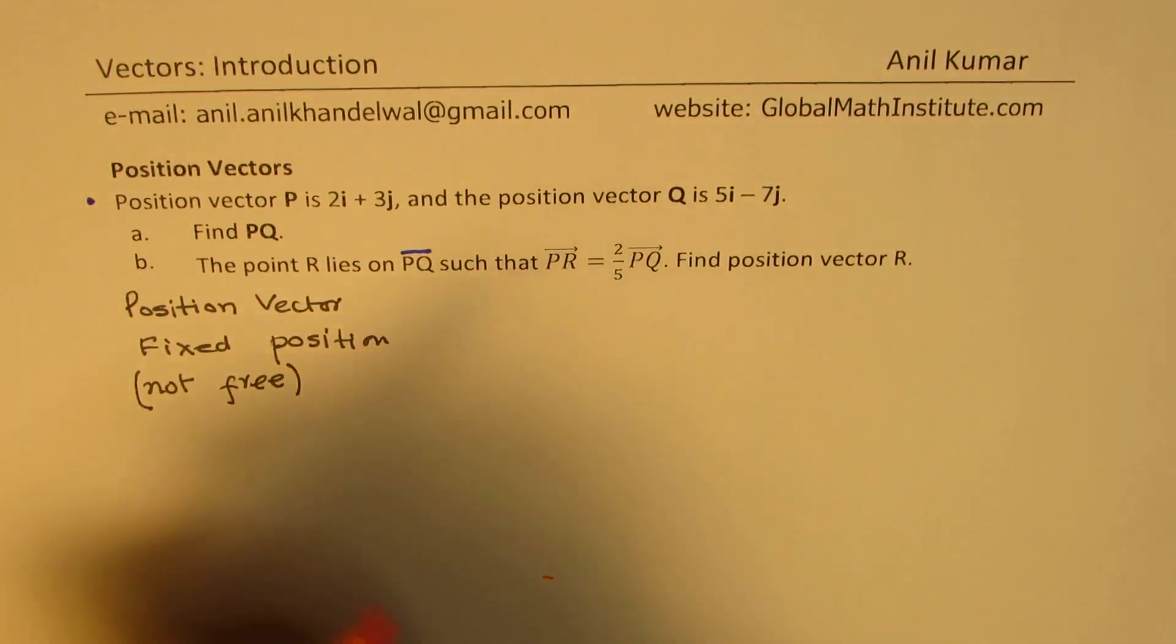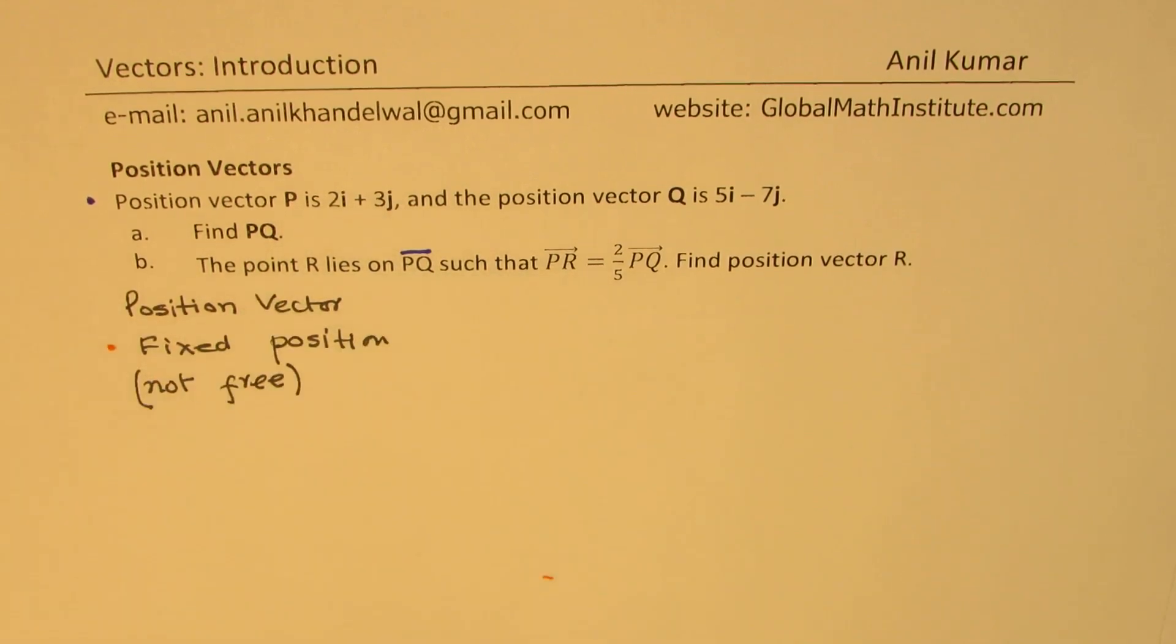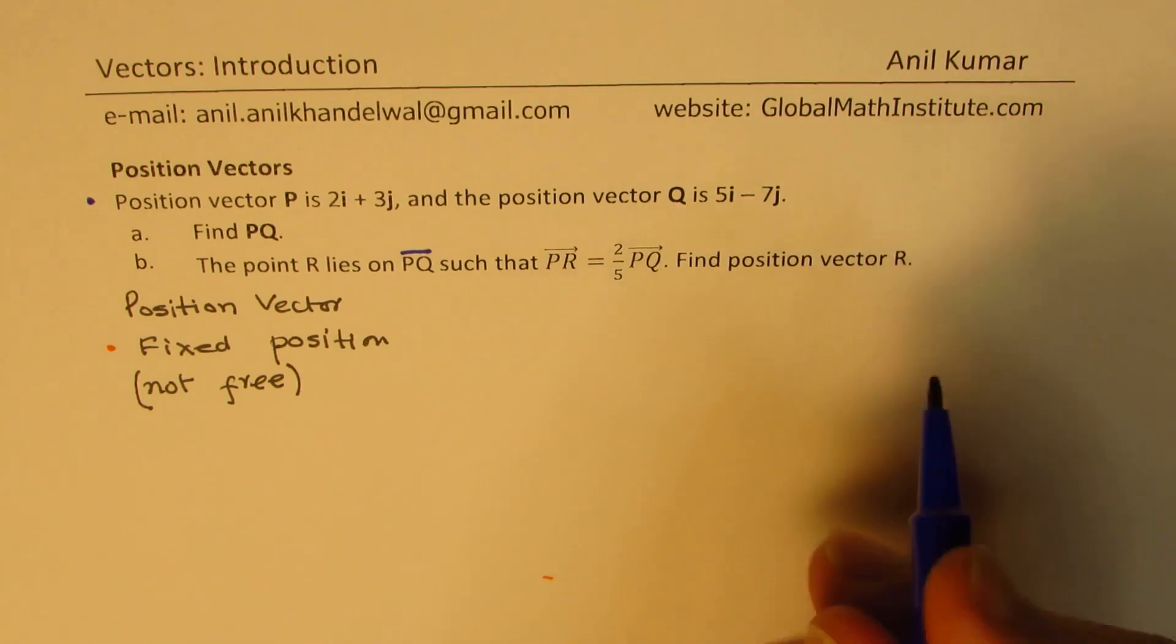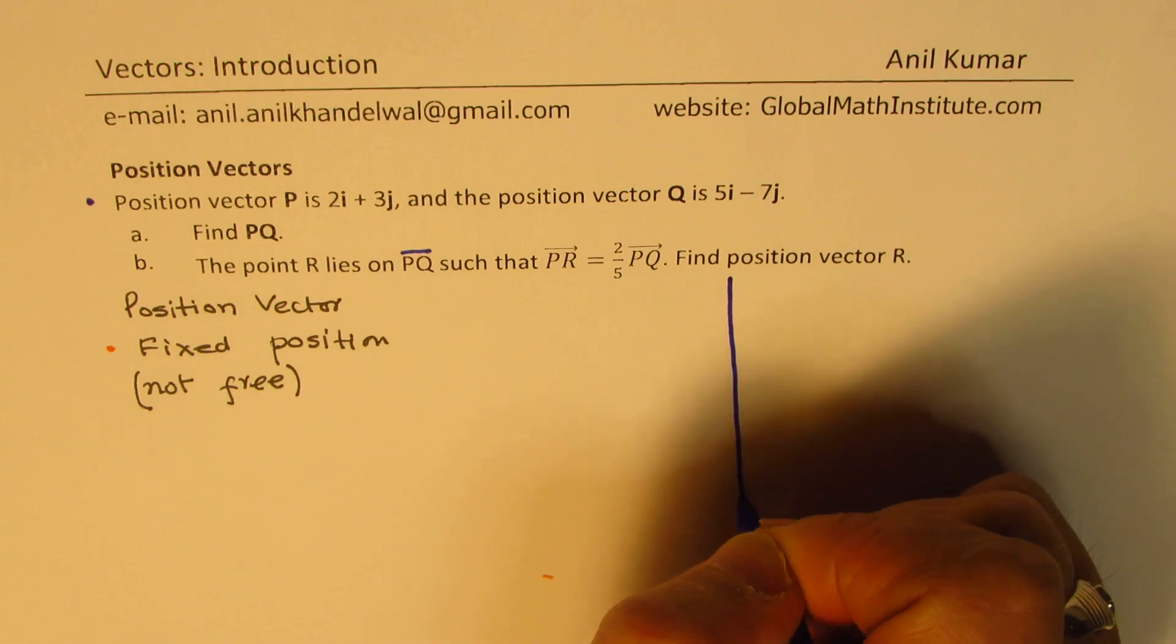So normally, if I see a vector, I could represent that vector anywhere. But when I say a position vector, I am saying that this position is fixed. Now fixed with respect to what? That is what we will understand. So let me just make a coordinate plane here.